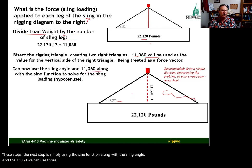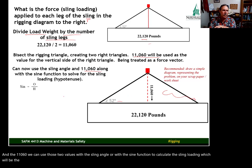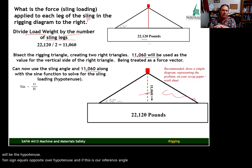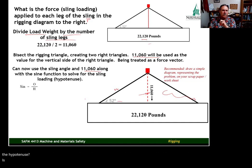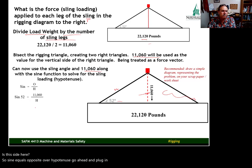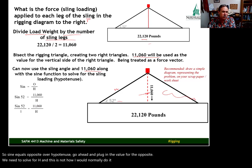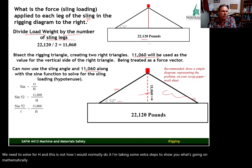Again, sine equals opposite over hypotenuse. And if this is our reference angle, the opposite is this side represented by 11,060, and the hypotenuse is this side here. So sine equals opposite over hypotenuse. Go ahead and plug in the value for the opposite. We need to solve for h. And this is not how I would normally do it. I'm taking some extra steps to show you what's going on mathematically with the transfiguration of this formula. I'm taking sine 52 and putting that over 1. So we have sine 52 over 1 equals 11,060 over h. Now we cross multiply.